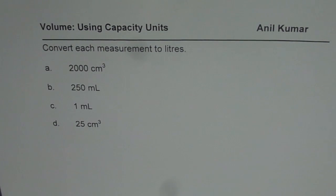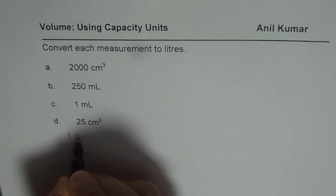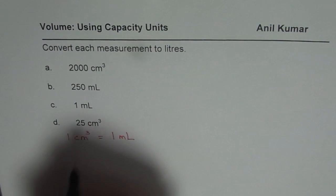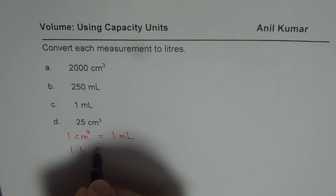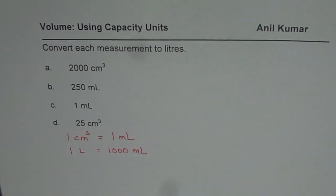I'm Anil Kumar and before we get into details of volume, let us get conversant with the units. In this video we will learn how to convert centimeter cube and milliliters into liters. The question here is convert each measurement to liters. The conversion factor as you know is one centimeter cube equals one milliliter, and as far as liters are concerned, one liter is one thousand milliliters. You can use this conversion factor and then answer the question. So you can pause the video now, answer, and then check with my solution.